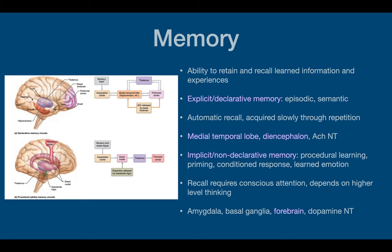Implicit or non-declarative memory includes procedural learning, priming, conditioned response, and learned emotion. The recall takes conscious effort and depends on higher-level thinking. This involves the amygdala, basal ganglia, and forebrain, and the neurotransmitter used is dopamine. Dopamine helps encode a stronger memory — the more dopamine there is, the more it encodes memory using the amygdala into the basal ganglia. The forebrain processes these memories. For example, if you date someone who wears a distinctive cologne, the romantic association creates a conditioned response like increased heart rate — a learned emotion encoded with dopamine via the amygdala.